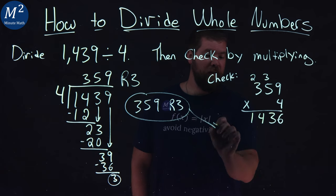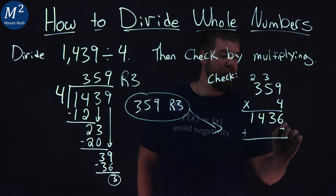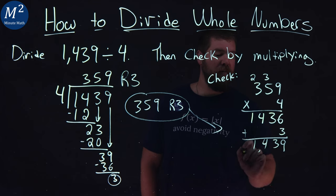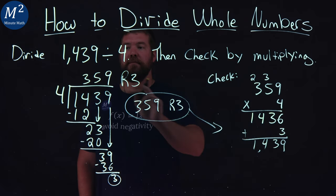We're then going to take that remainder and add 3 to that. 6 plus 3 is 9. Everything else comes down. And we have 1,439, which we should. Our check worked out.